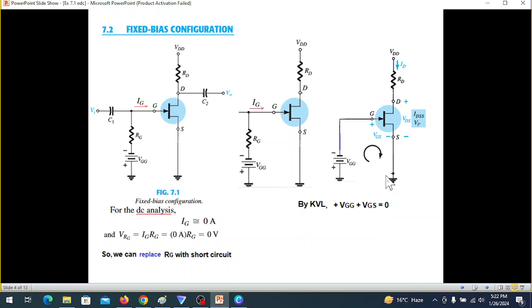Now we'll derive an important relation by taking this KVL loop. Plus VGG is equal to VGS. That means VGS gate to source voltage is equal to negative VGG. The VGG is battery voltage, so it is equal to the battery voltage. That means VGG is a fixed DC supply, so VGS is fixed. That is why this circuit is called fixed bias circuit.